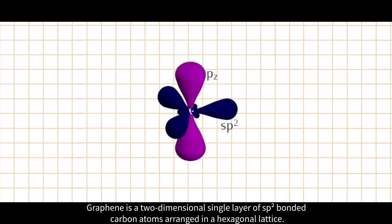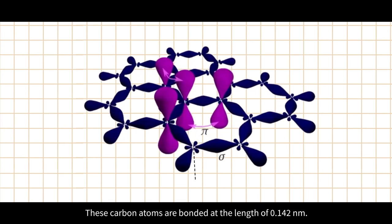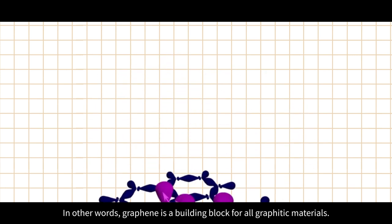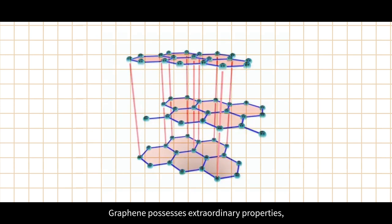Graphene is a two-dimensional single layer of sp2 bonded carbon atoms arranged in a hexagonal lattice. These carbon atoms are bonded at the length of 0.142 nanometers.